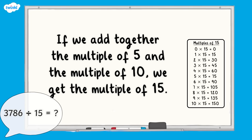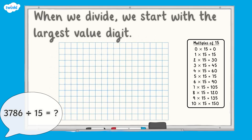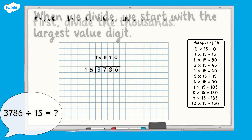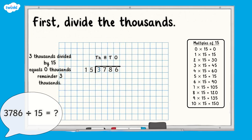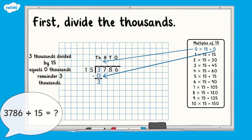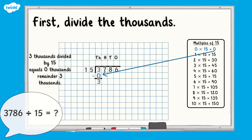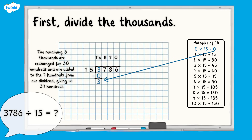Unlike with addition, subtraction and multiplication, when we start with the smallest value digit, when we divide, we start with the largest value digit. In this four-digit number, that is the thousands digit. First, divide the thousands. Three thousands divided by 15 equals zero thousands with three thousands remaining. We write our quotient above the line, but because we don't use leading zeros in whole numbers, we don't need to write it in. When we subtract the zero thousands from the three thousands we started with, it leaves three thousands. These are exchanged for 30 hundreds and added to the seven hundreds from 3,786, giving us 37 hundreds.